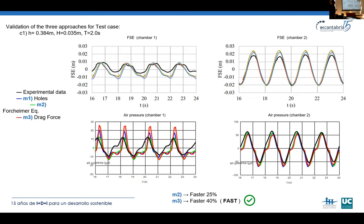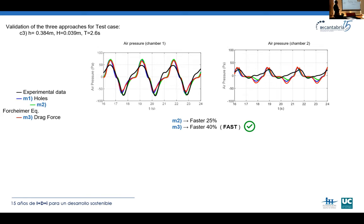Here are results for one case: water depth of 0.384 meters, wave height of 0.035 meters, and a period of 2 seconds. On top are the free surface elevations inside the two chamber sensors; below are the air pressures inside the chambers. We see good agreement between the experimental data, the first approach (holes), the second approach (Forheimer equations), and the third approach. In terms of computing time, the third approach is about 40 times faster, making it the preferred choice for preliminary results.